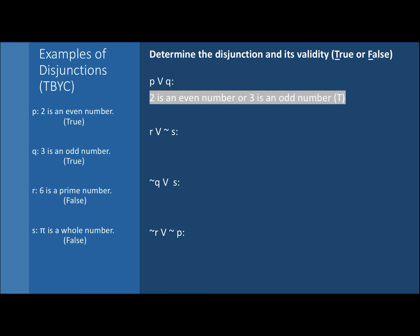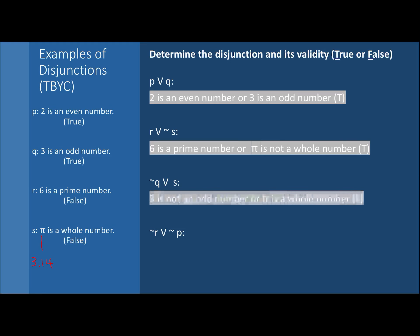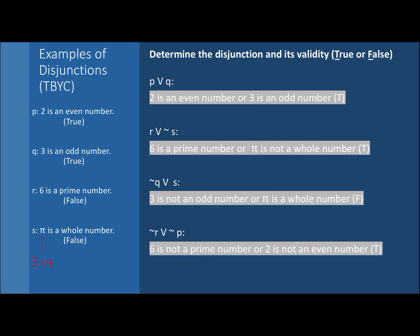For R or not S: 'Six is a prime number or pi is not a whole number.' Pi is 3.14, which is not a whole number, so that's a true statement. For not Q or S: 'Three is not an odd number or pi is a whole number' — both are false, so the entire disjunction is false. For not R or not P: 'Six is not a prime number or two is not an even number' — true or false — which makes the disjunction true.